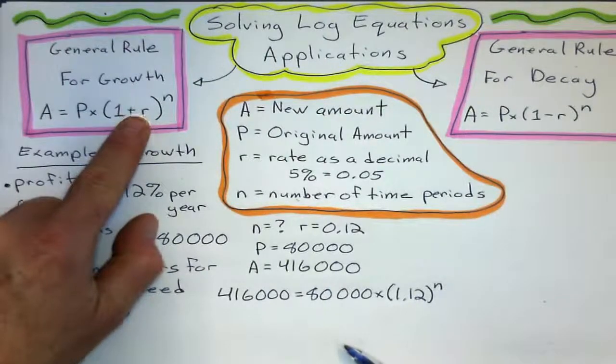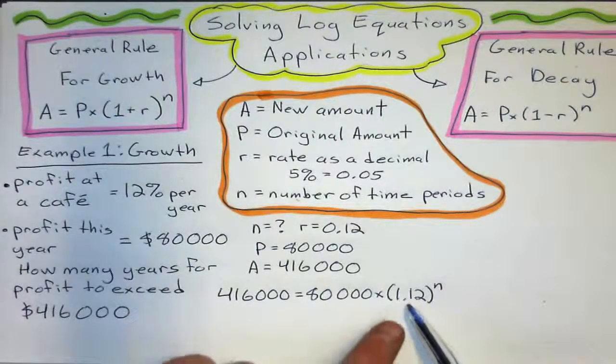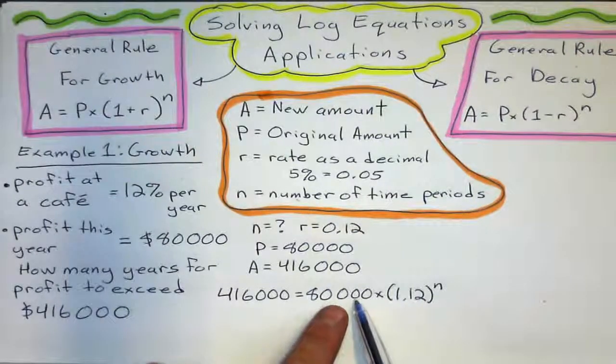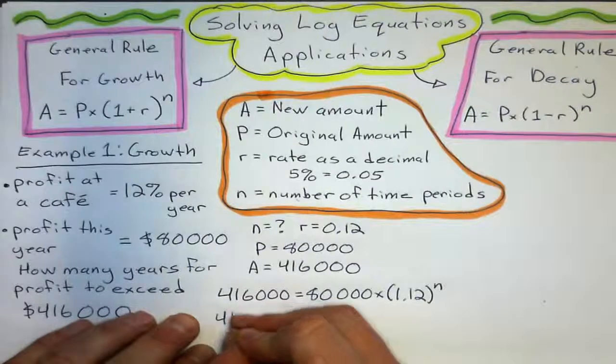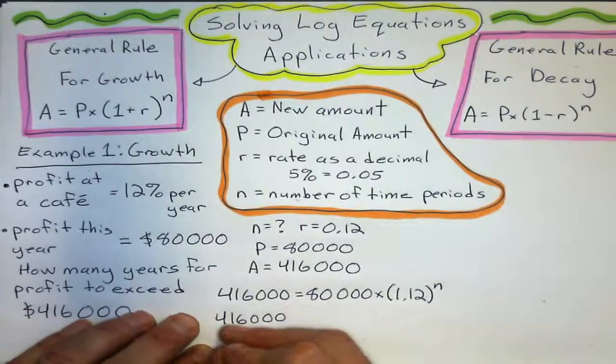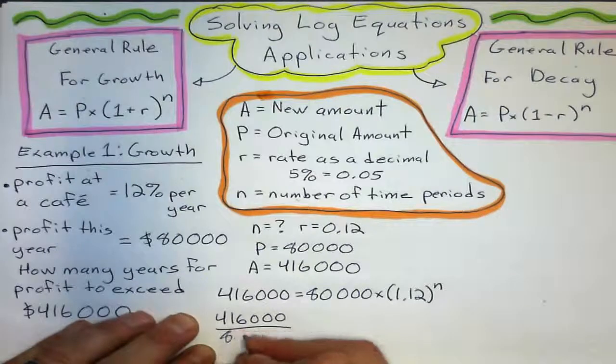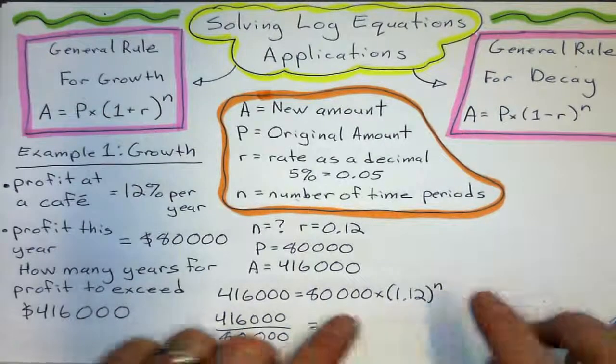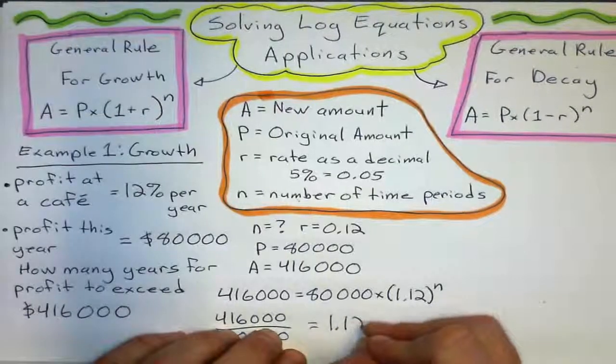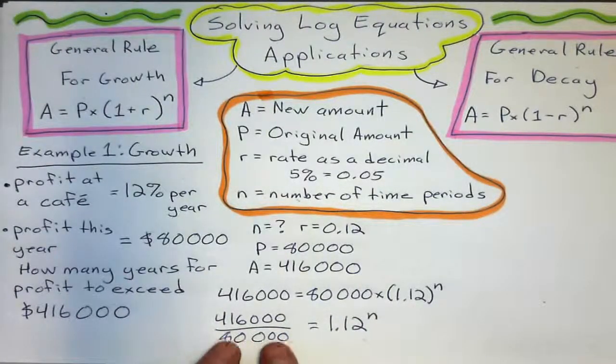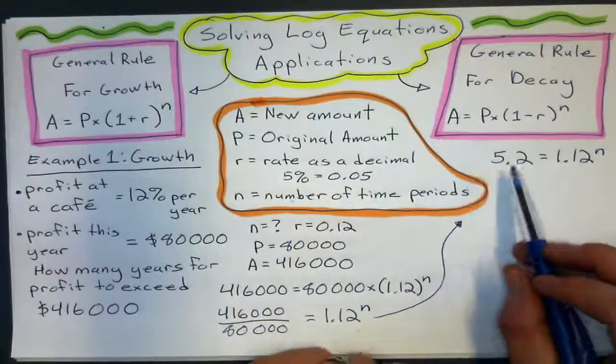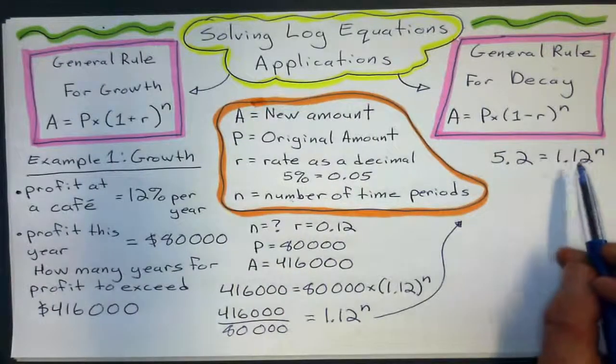So, a percent increase if it's less than 100% will always be 1 point something. So, here I'm solving for N. But the first thing I need to do is divide, I need to divide this by that 80,000. Because I want this power by itself. I just want 1.12 to the power of N. So, I'll get some decimal here. 416,000 divided by 80,000.